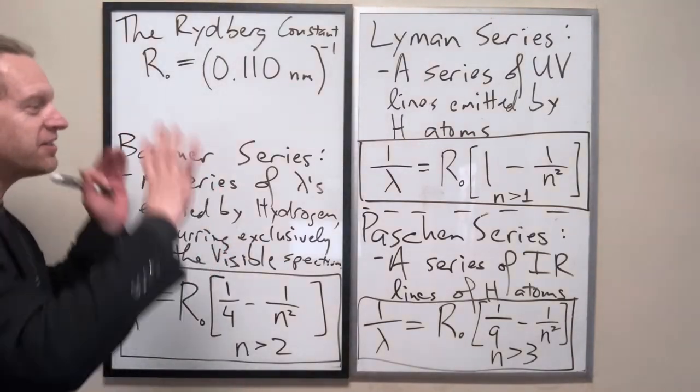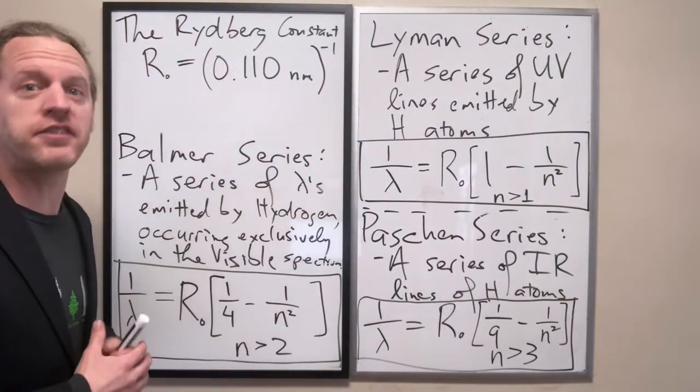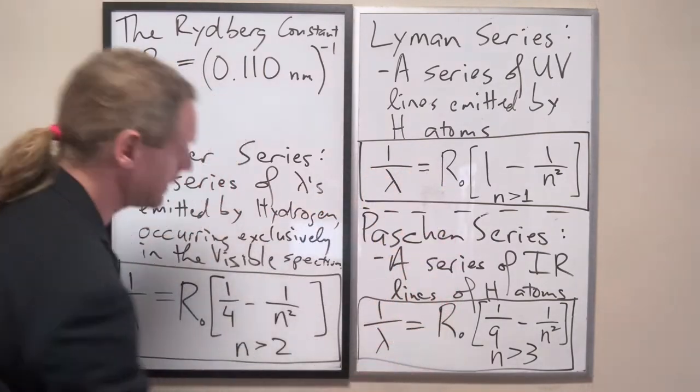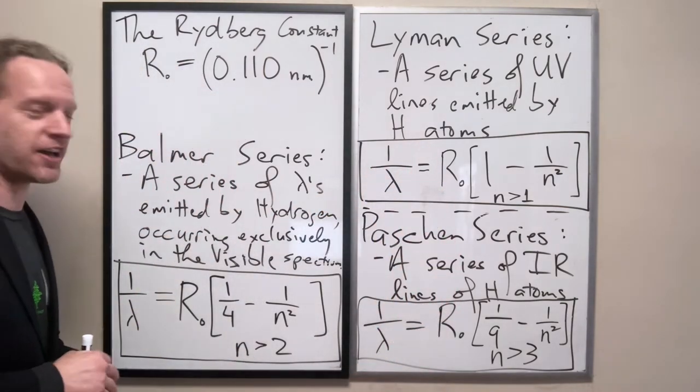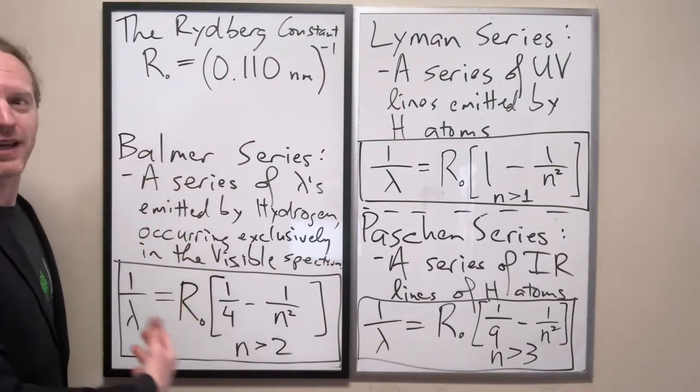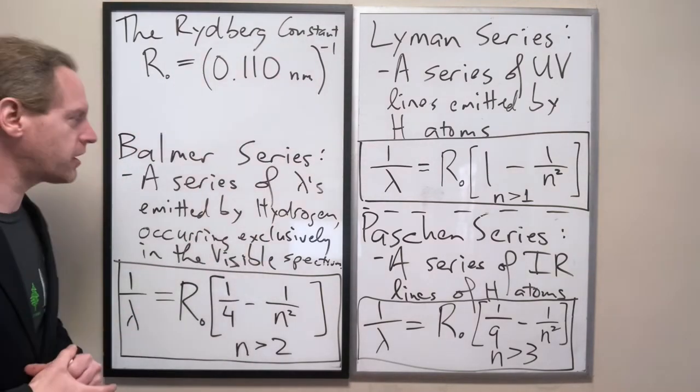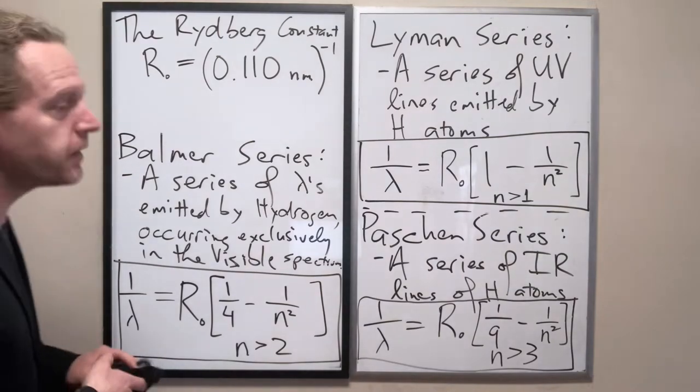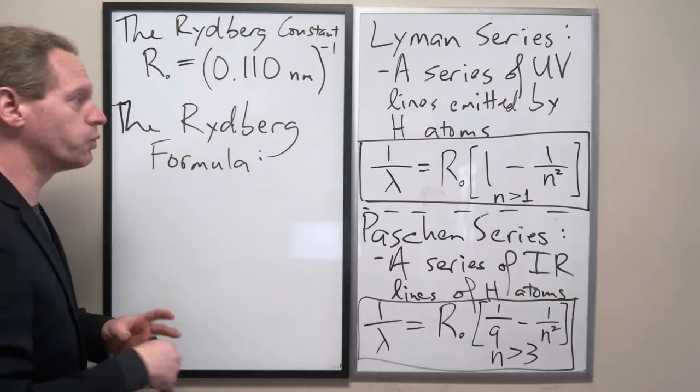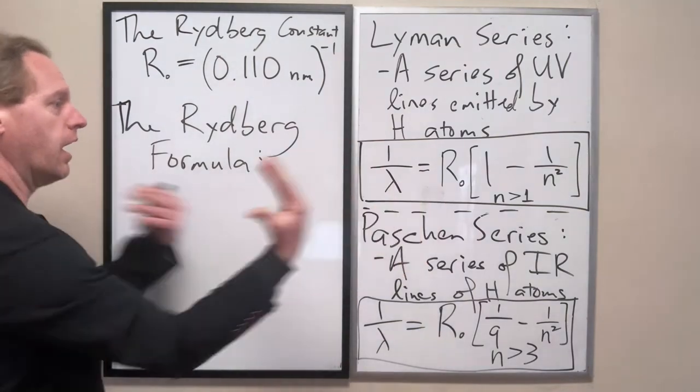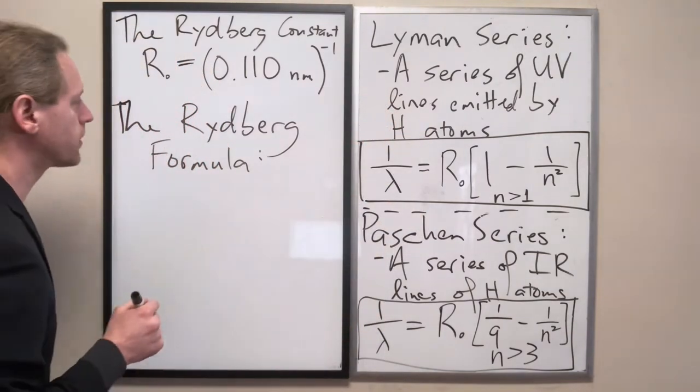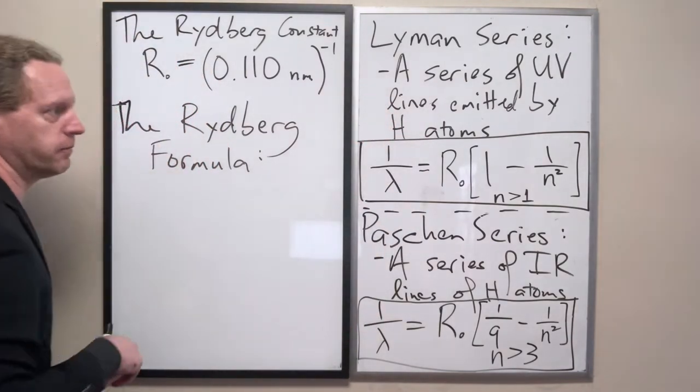So this is where we're at - this is the mathematical predictions for all of the entirety of the hydrogen spectrum. And Rydberg identified we can make an even more overarching prediction here. Let me get a little more space. So the Rydberg formula is basically just a way of conglomerating all of these seemingly disparate but very similar formulas into one, and it's actually quite simple.